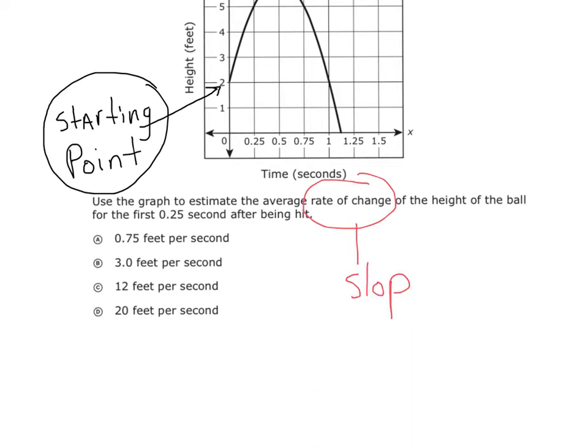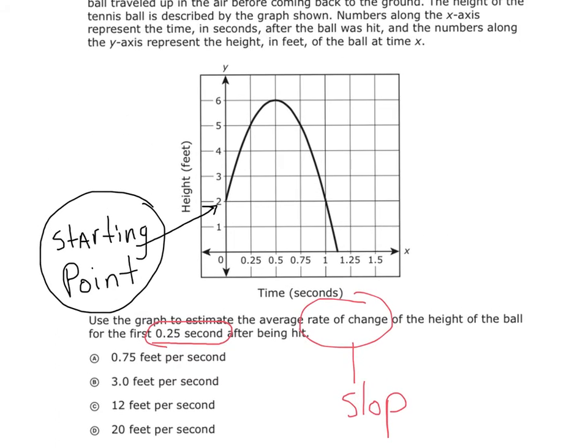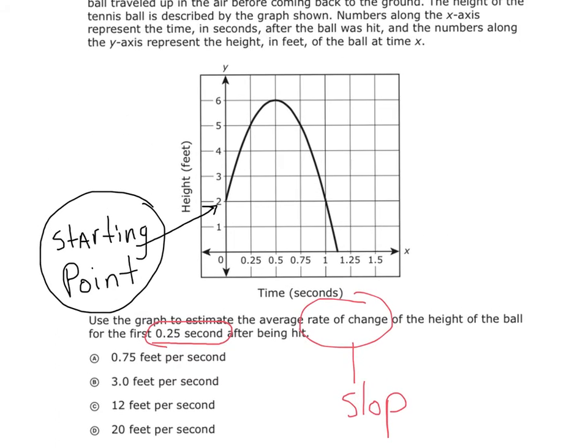So they want to know the slope for the first 0.25 seconds. So slope for the first 0.25 seconds means from 0 to 0.25. So let's write two points.